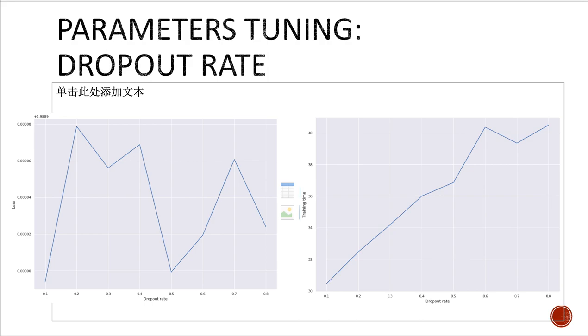This is the dropout rate. However, the dropout rate is kind of more arbitrary. And the best parameters we got from the dropout rate is 0.5.